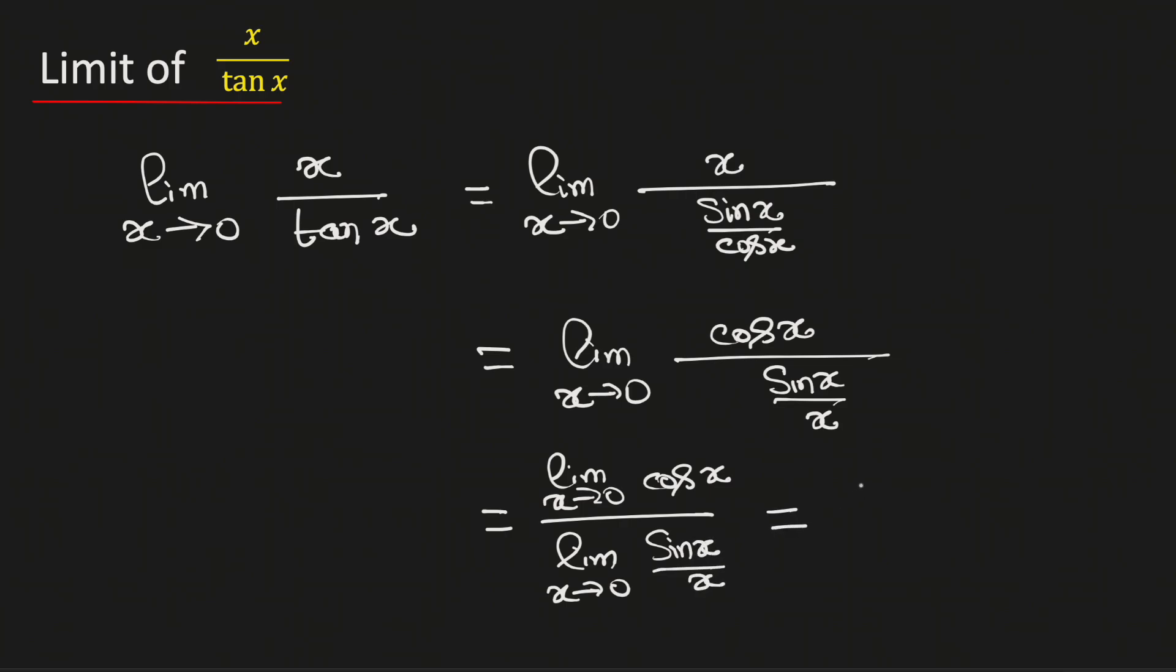The above limit is same as cosine of 0 and we know that the limit of sin x by x as x approaches 0 is equal to 1. So, this is same as 1. As the value of cos 0 is 1, so this is same as 1 divided by 1, which is same as 1.